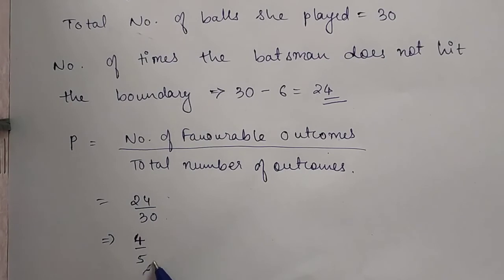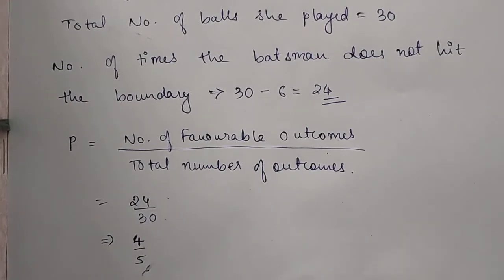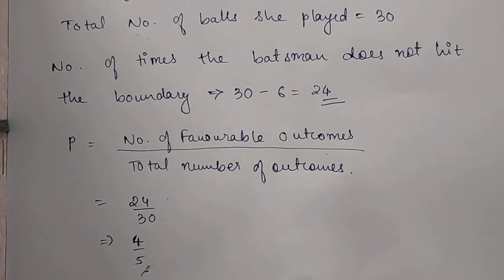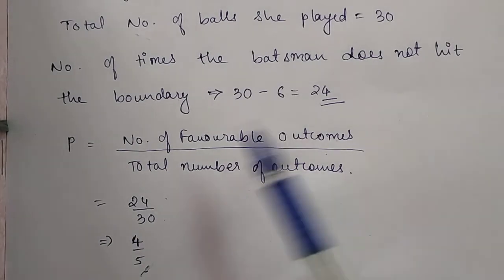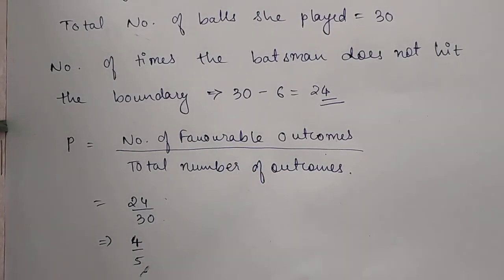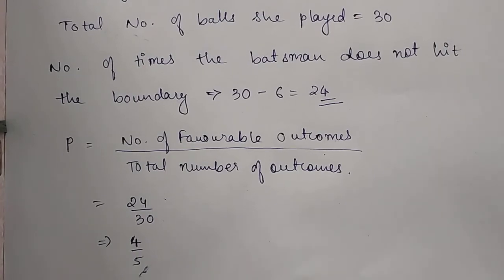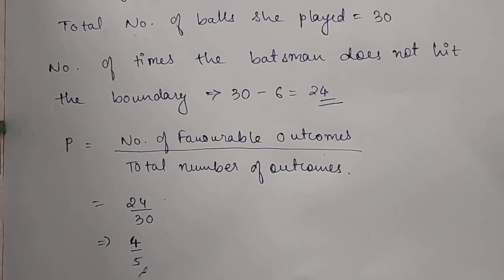This is your final answer — 4/5 — which means out of 5 chances, 4 times the boundary will not be hit and 1 time the boundary hit will happen. That's it, thank you.